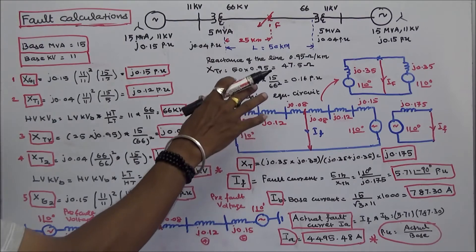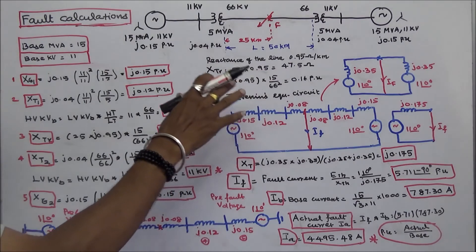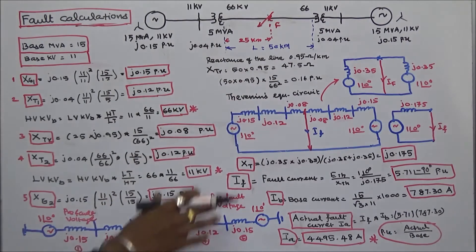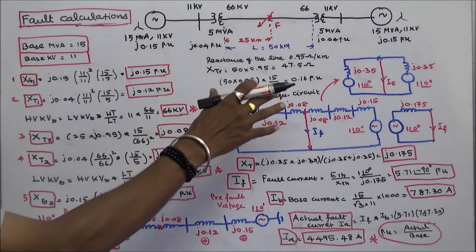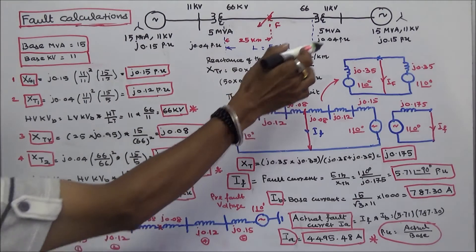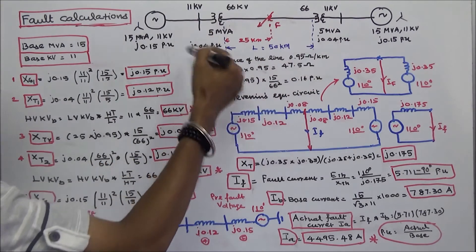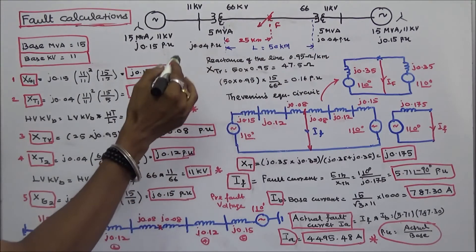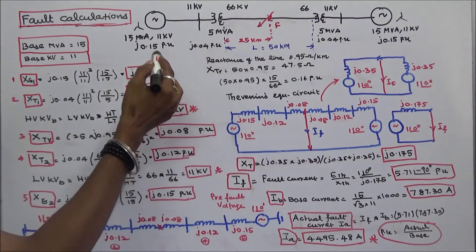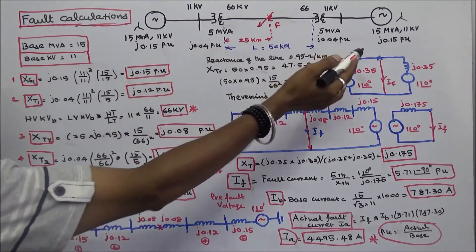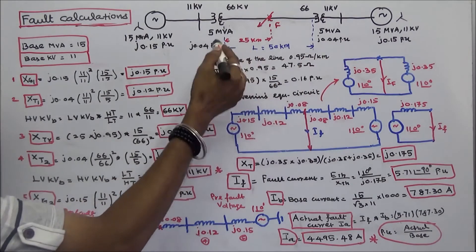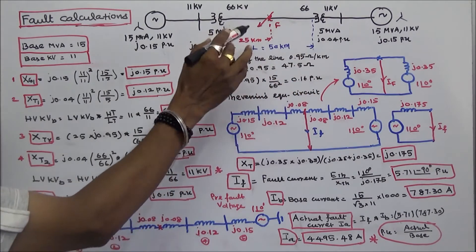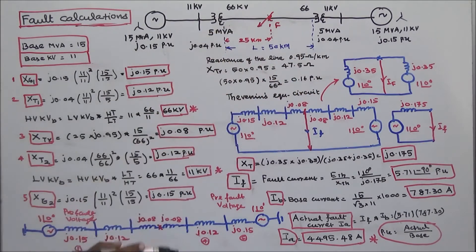In this class we work out one problem on Symmetrical Fault Calculation using Thevenin's Theorem. This is the given network, which consists of two generators, two transformers, and one transmission line.